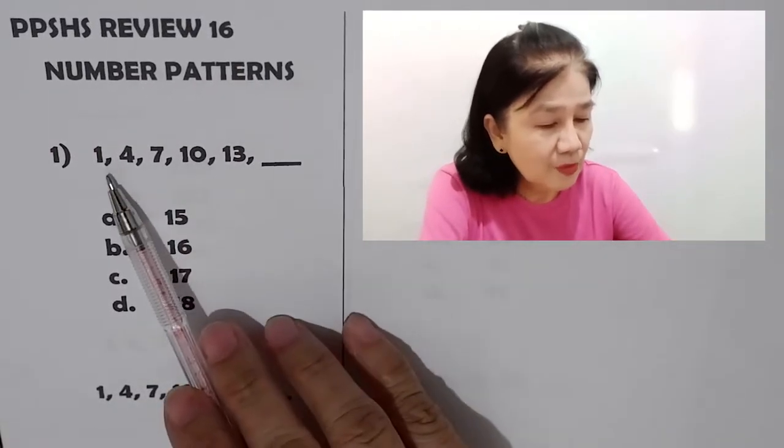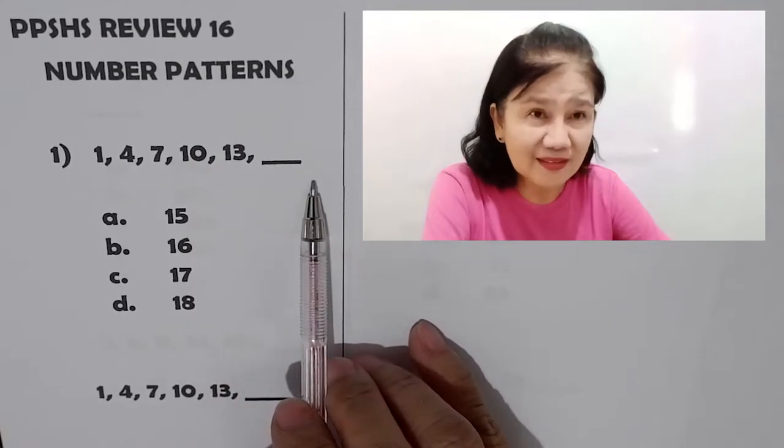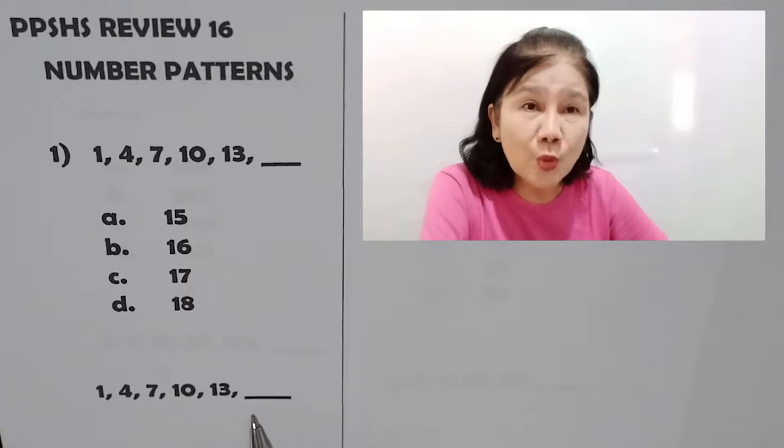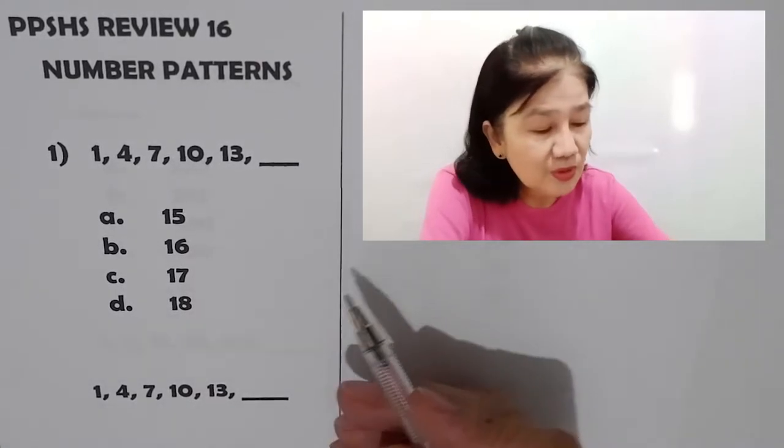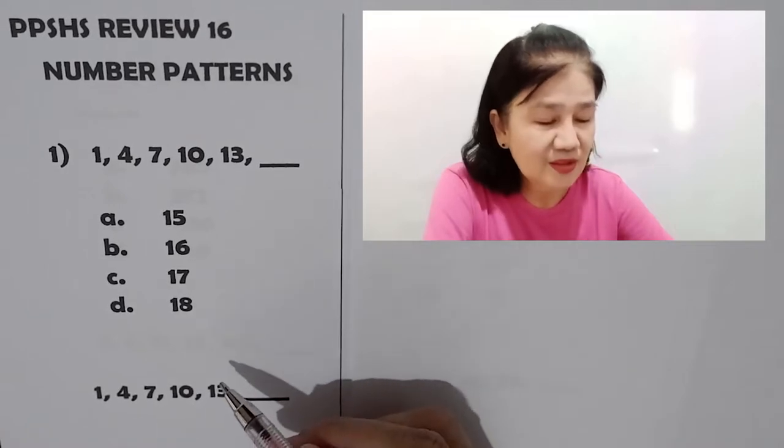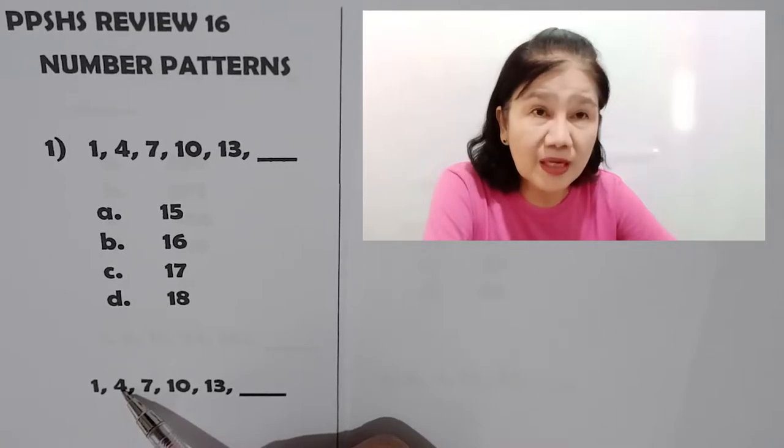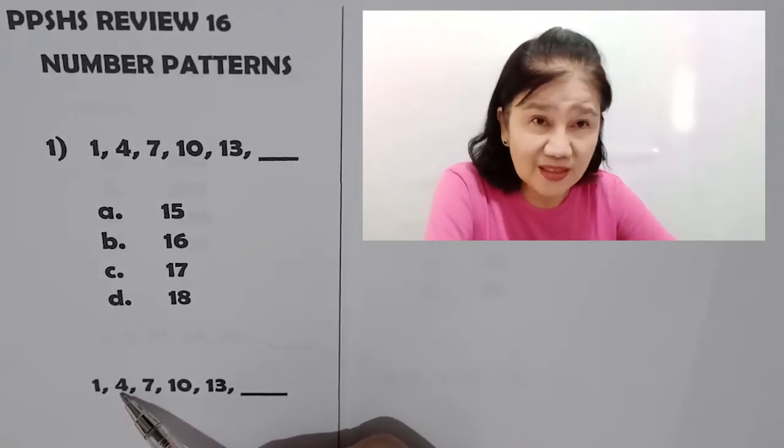Problem number one. We have here 1, 4, 7, 10, 13 blank. Okay, in this number sequence, whenever you're given a number sequence, you have to find a pattern. So, think of what to add, subtract, multiply, or divide to 1 so that you get 4.